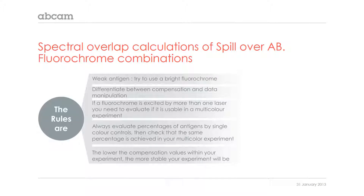The calculation of spillover and the fluorochrome combination rules are: weak antigen — use a bright fluorochrome; differentiate between compensation and data manipulation, as in the PE-Cy5 scenario; and if a fluorochrome is excited by more than one laser, you need to evaluate whether it is usable in your multicolor experiment.